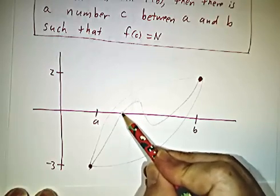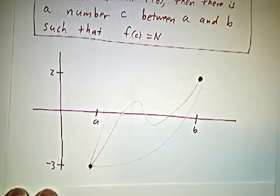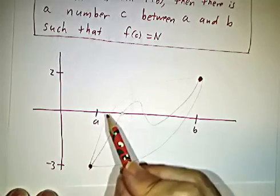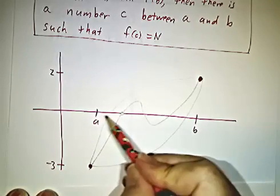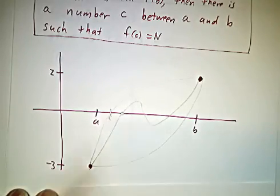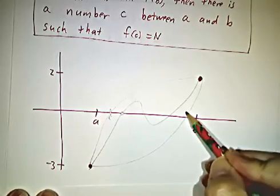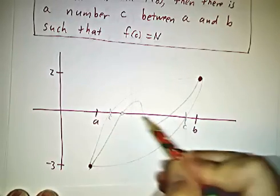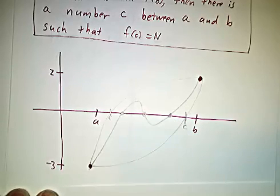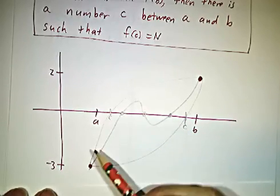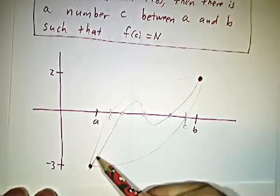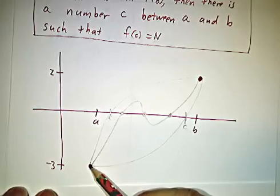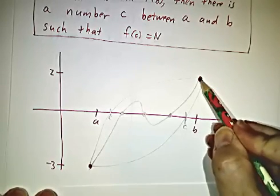At some point you had to have a point where the function value was 0. If this was your curve, then this is your value of c where f(c) is 0. If this is your curve, then there are several values of c. But no matter what function it is, as long as it's continuous, to go from negative 3 to 2, you have to go through 0.